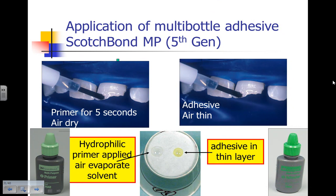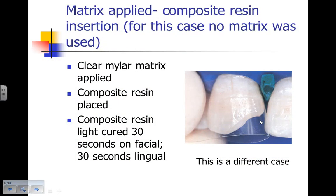For this case we use the 5th generation adhesive Scotchbond Multipurpose. We apply the hydrophilic primer to enamel and dentin for 5 seconds, agitate it, and air dry. We then apply the adhesive to the etched enamel and dentin surfaces after the primer, air thin it, and light cure on both the facial and lingual. For this case we didn't need a clear mylar strip because there was space between the distal of number 9 and the mesial of number 10, though for most Class 4s we'll use a mylar matrix strip.